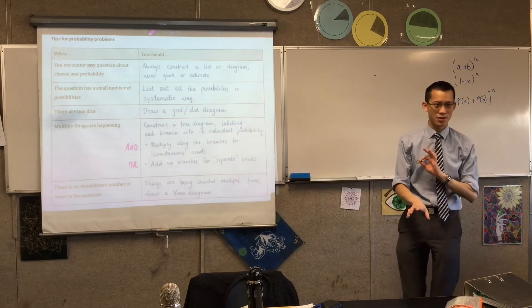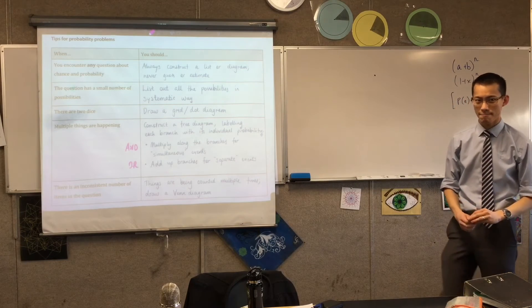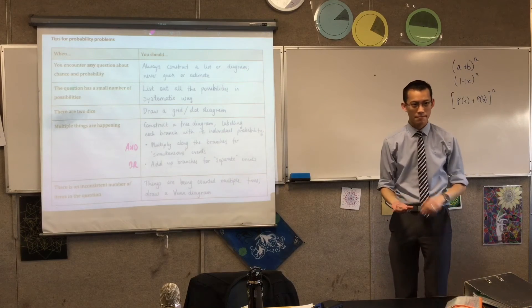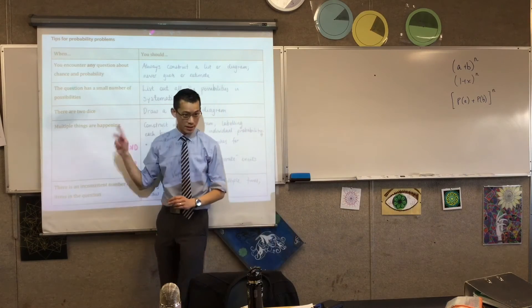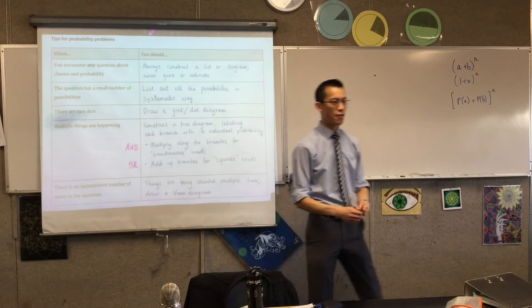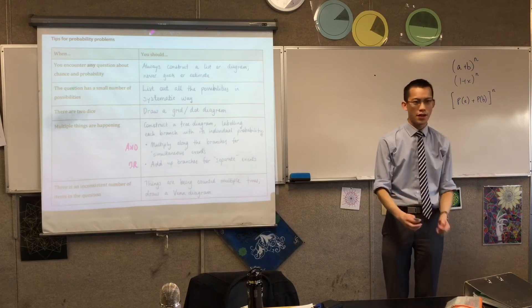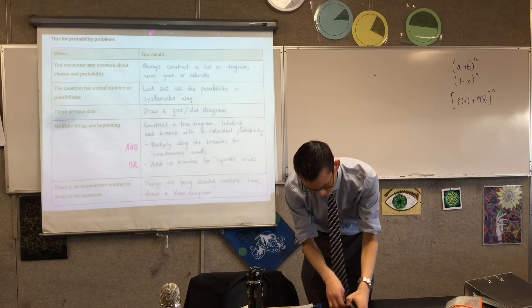I'm going to pause there. Do you want to ask any questions? Wait, but you can't get two heads at the same time on one coin. Okay, so I'm talking about if multiple things are happening, like a multi-stage event. So if I, for instance, flip two coins.